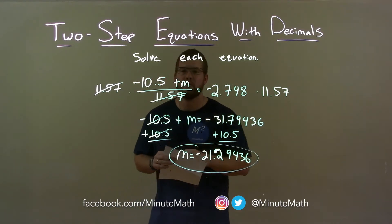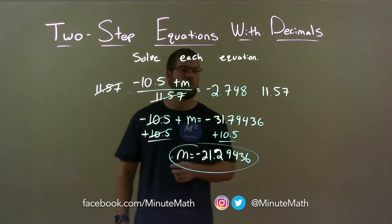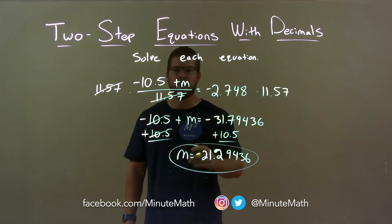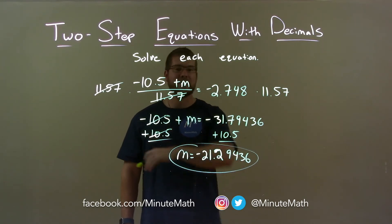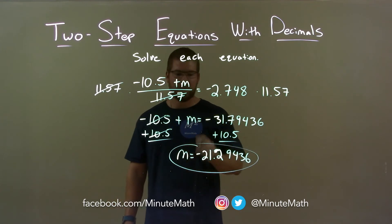So, quick recap. We're given negative 10.5 plus m over 11.57 equal to negative 2.748, and we have to solve for m. Multiply both sides by 11.57, then add 10.5 to both sides, giving me my final answer, m equals negative 21.29436.